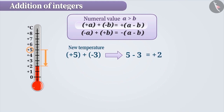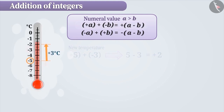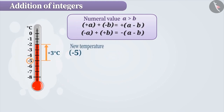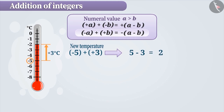Similarly, if we have to find minus 5 plus plus 3, then we first carry out 5 minus 3, which gives the result 2. Then we include the sign of the larger number, that is the minus sign of minus 5. Therefore, the answer is minus 2.